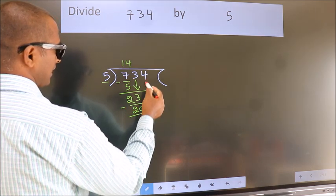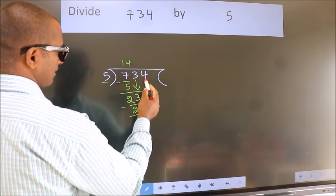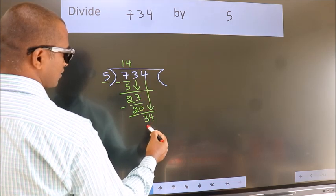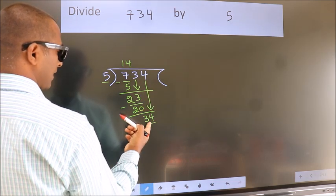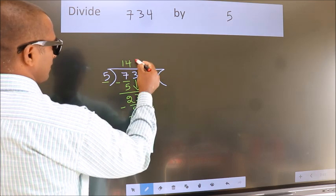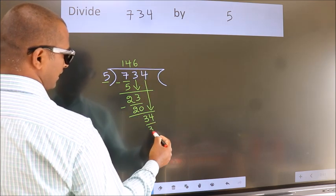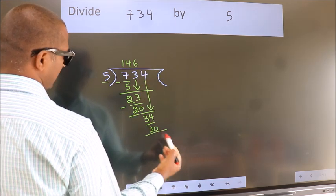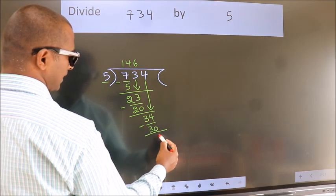After this, bring down the beside number. So, 4 down. So, 34. A number close to 34 in the 5 table is 5 sixes, 30. Now we subtract. We get 4.